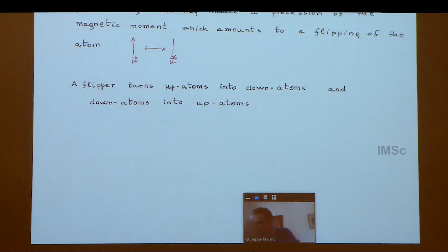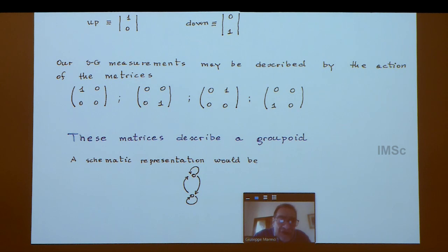If you now use a homogeneous magnetic field, then via precession you can flip atoms, going from an up atom to a down atom. So you have two selectors and two flippers. Next slide, please.